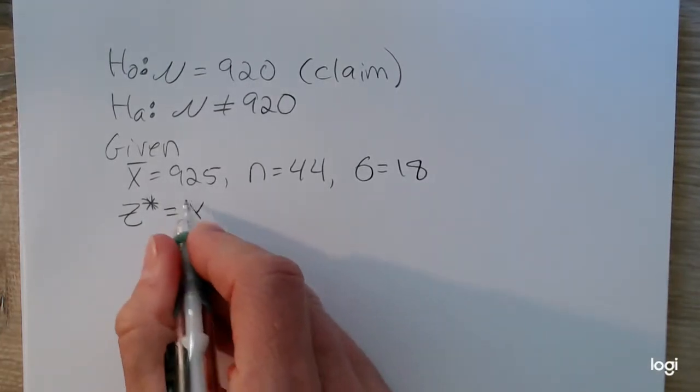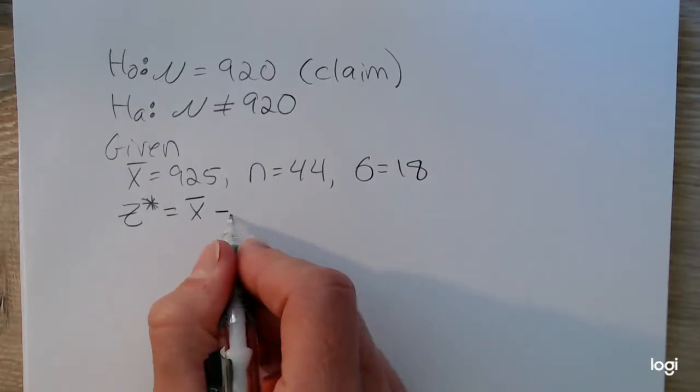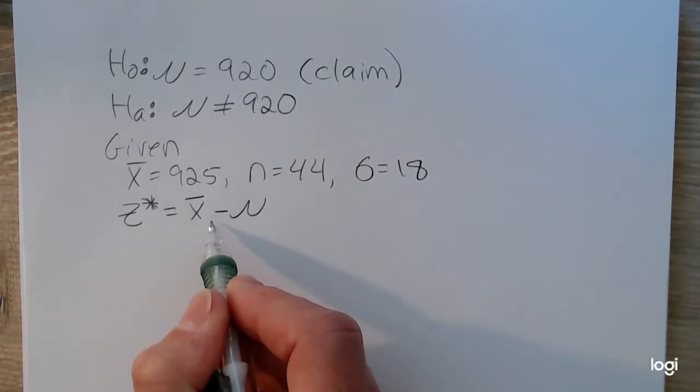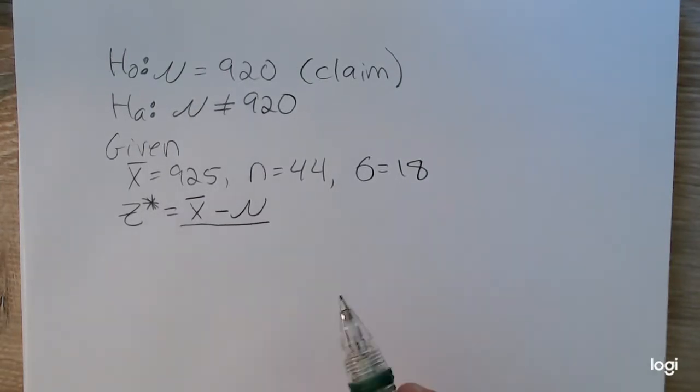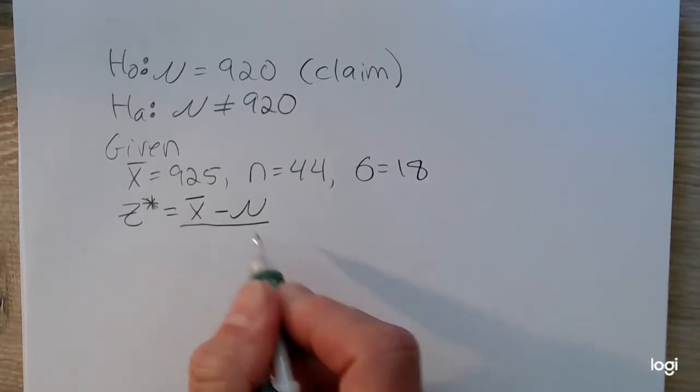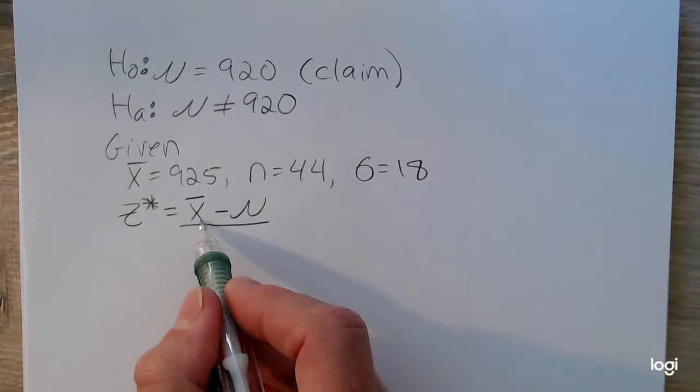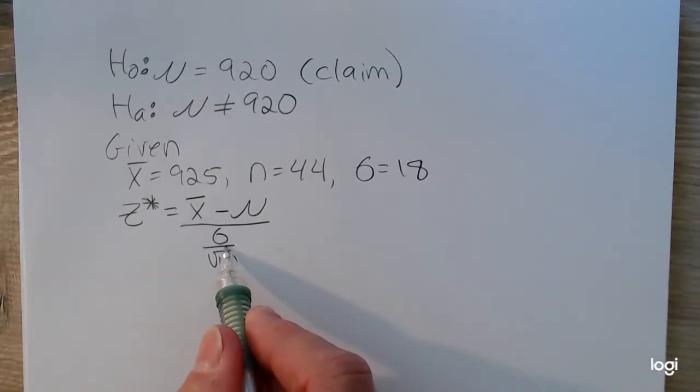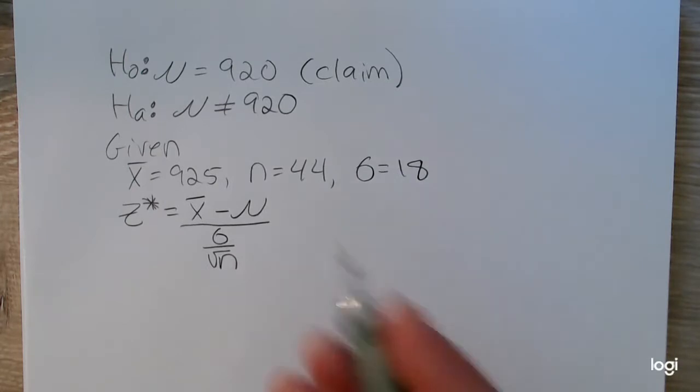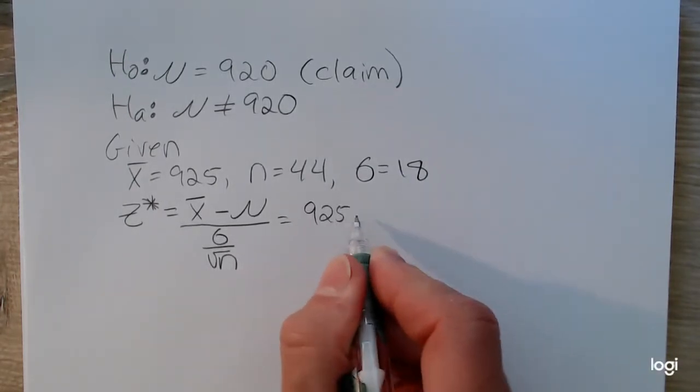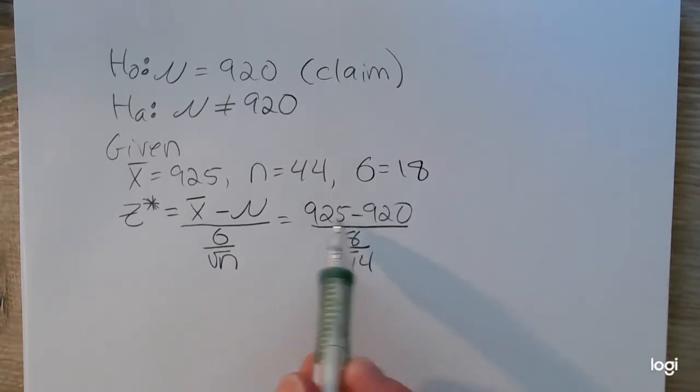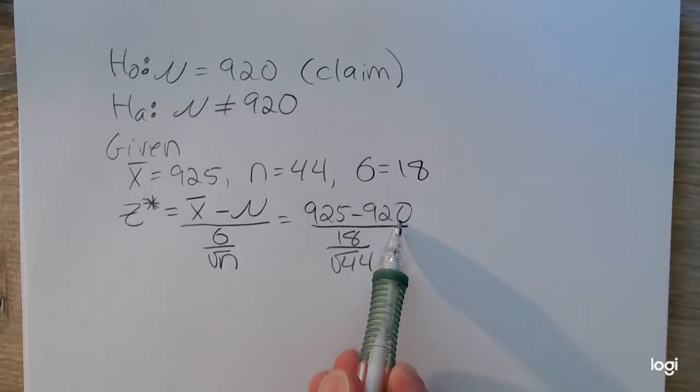The test statistic formula is X bar, what we observe from the sample, minus what is claimed in the hypotheses. Is this difference statistically significant enough to reject the null? To know for sure at our given level of significance, we want to standardize. We need to divide by some sort of standard deviation. Because we're talking about the sampling distribution of X bar, the central limit theorem gives us this denominator: sigma over the square root of n. Plugging all of the information in, I have 925 minus 920 over 18 over the square root of 44.